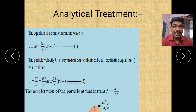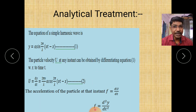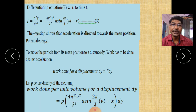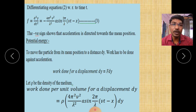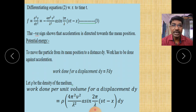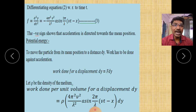Now, differentiating equation 2 again with respect to time t, we get the acceleration of the particle: f = d²y/dt² = −(4π²v²/λ²) · a sin(2π/λ)(vt − x). This is equation 3, the acceleration of the particle. The negative sign shows that acceleration is directed toward the mean position.